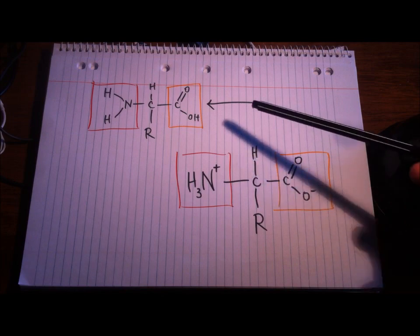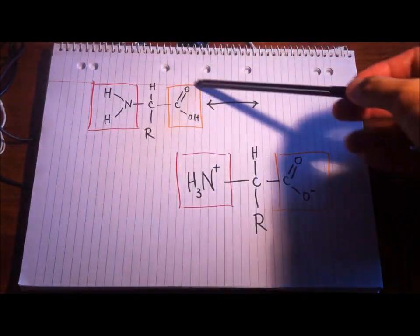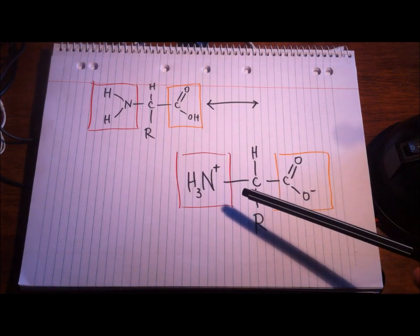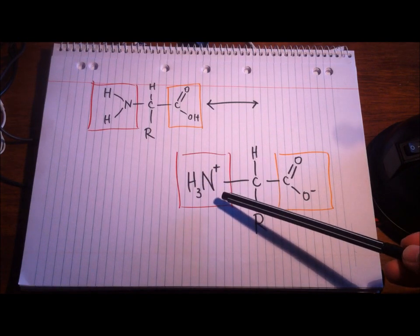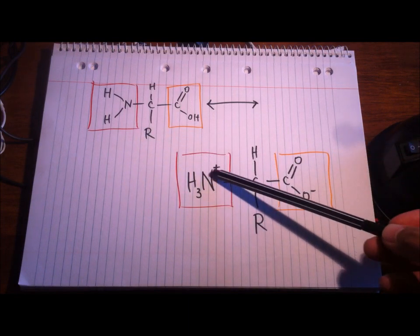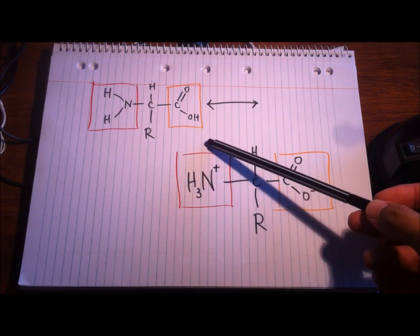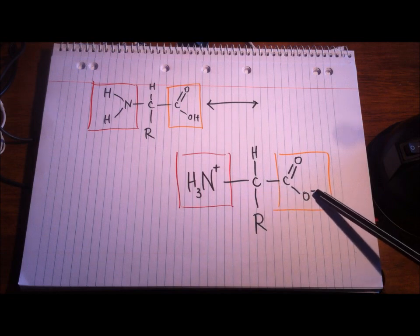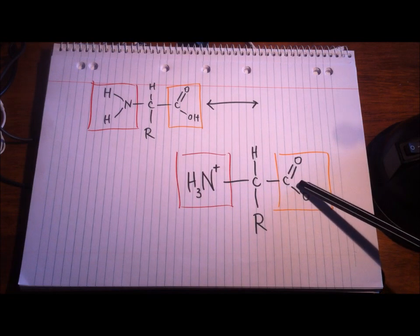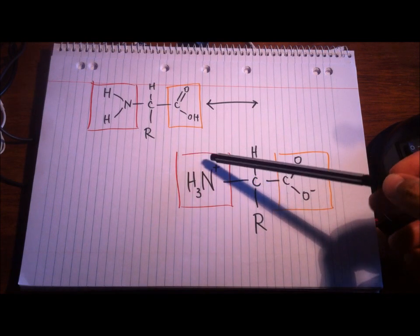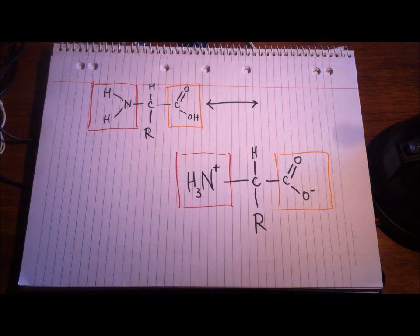Oftentimes you'll see amino acids listed like this here to the left, but they can actually exist in different states. The hydrogen, for example, can attach to the amino group nitrogen to create a proton here, and the proton on the carboxyl group often leaves, creating this group. So these are actually equivalent — just different states of the amino acid in nature.